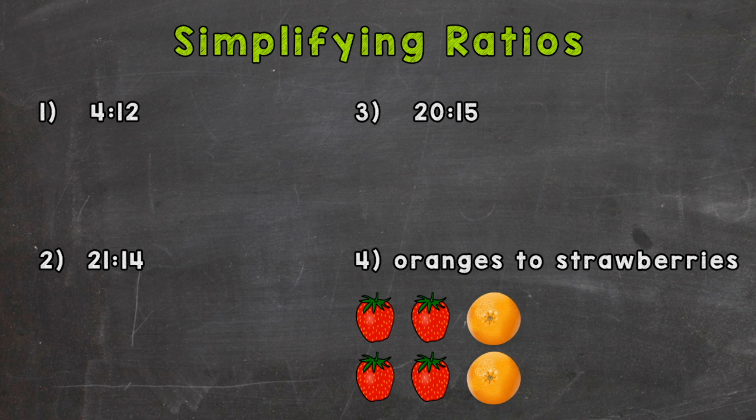Simplifying ratios is exactly like simplifying fractions. We need to find a greatest common factor between the two numbers of the ratio, divide both those numbers by the greatest common factor, and you get a simplified ratio.